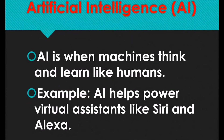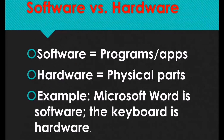The next one is AI. AI stands for artificial intelligence. Most of us don't even know the meaning of it because we always just say AI, but the meaning is artificial intelligence. AI is when machines think and learn like humans. For example, AI helps power virtual assistants like Siri and Alexa. So AIs are artificial intelligence — they behave the same like humans, but they are artificial.